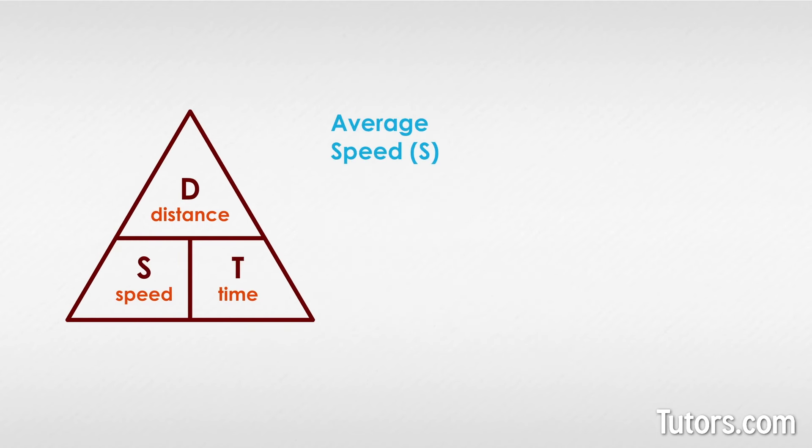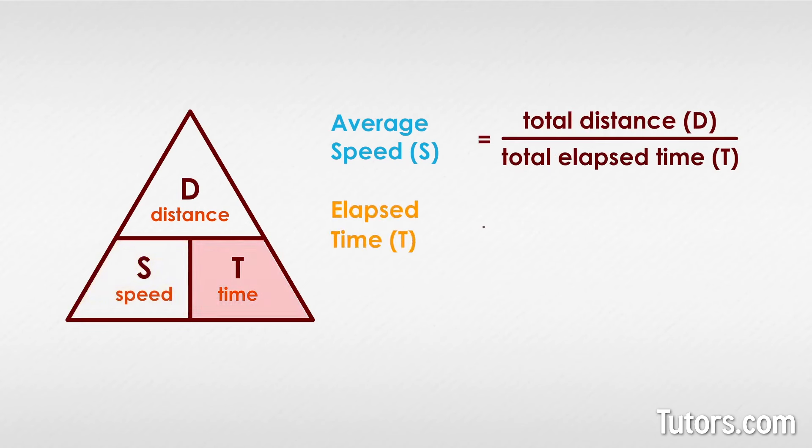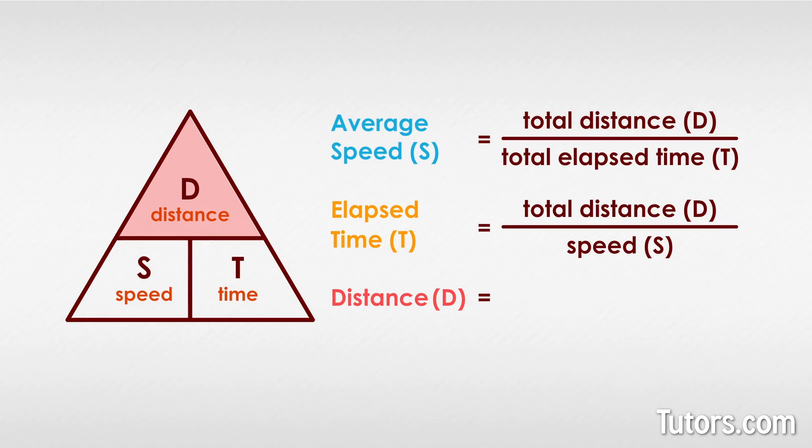To get average speed S, divide total distance by elapsed time. To get elapsed time T, divide total distance by speed. To get distance D, multiply speed times the amount of time.